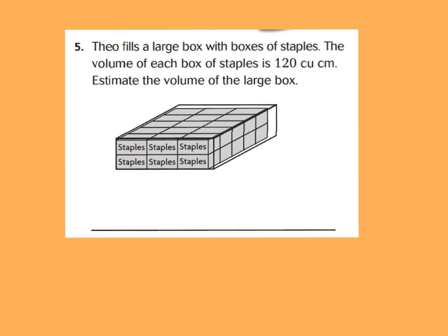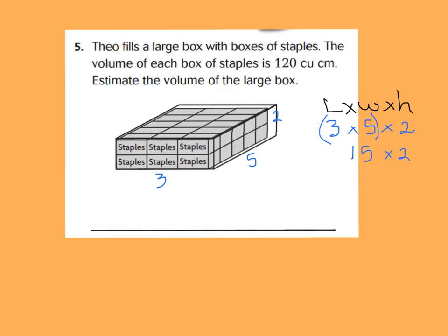I really want you to do this on your own for the best practice you can get. Let's read number 5: Theo fills a large box with boxes of staples. The volume of each box of staples is 120 cubic centimeters — that's the volume of each one of these individual boxes. Estimate the volume of the large box. We know each small box is 120 cubic centimeters, but we want to find the whole volume. Use length times width times height to find how many staple boxes are in the larger crate. Press pause now to find that volume. Your length should be 3, your width should be 5, and your height should be 2, giving me 15 times 2, which equals 30 staple boxes.